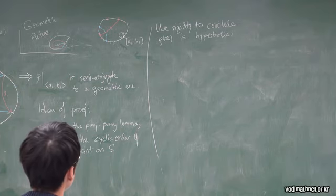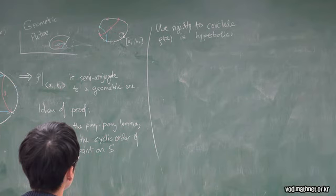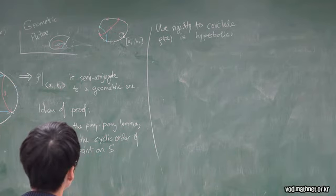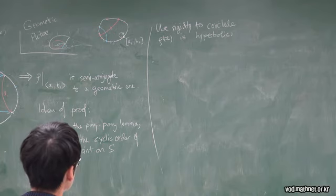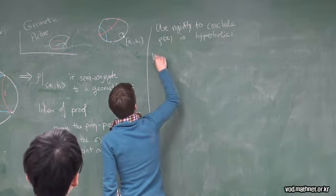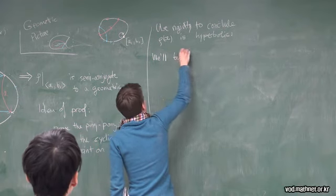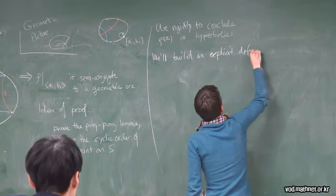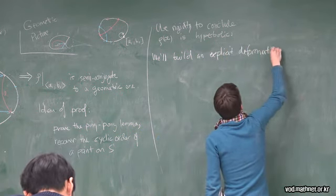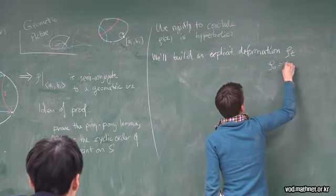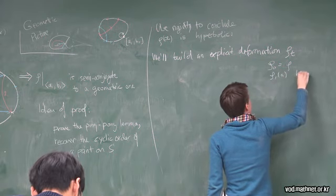So if I want to use that fact, I better write down some specific deformations, particularly if I could make a deformation where I knew at the end rho of A was hyperbolic, then I would have won because that's semi-conjugate to the original. Let's build a deformation, explicit deformation, rho_T with rho_0 equal to rho, and rho_1 of A hyperbolic.